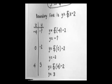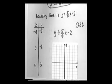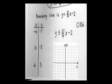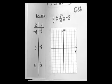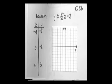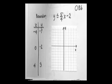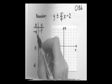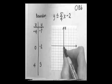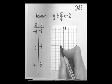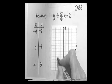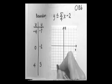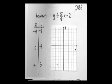Now let me put the inequality and the graph beside the table of values. We're going to graph y equals 5 fourths x minus 2. The first point is negative 4, negative 7 — left 4, down 7. The second point is 0, negative 2. The third point is 4, 3 — right 4, up 3. Here are the three points for the boundary line.